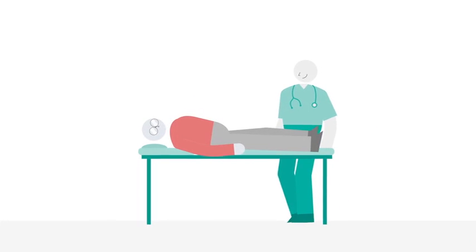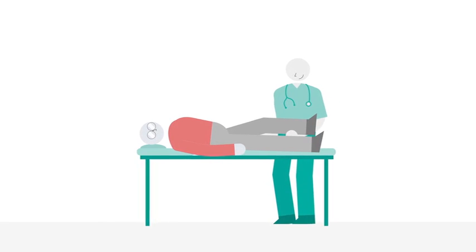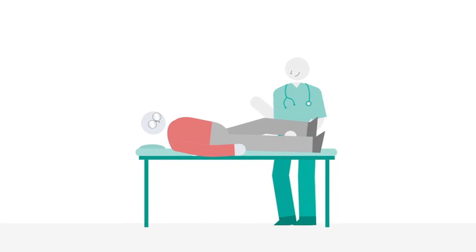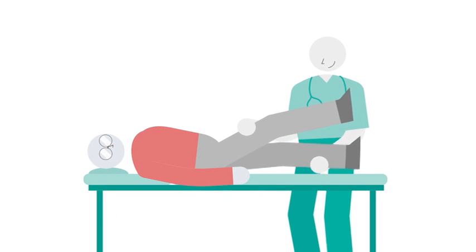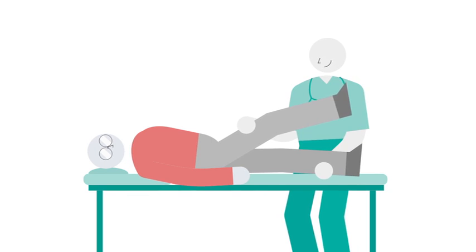Another example is Hoover's sign. Let's say you suffer from functional weakness in one leg and you are weak when trying to push this leg down. When your doctor asks you to push your other leg up against resistance though, the strength in the affected leg improves.